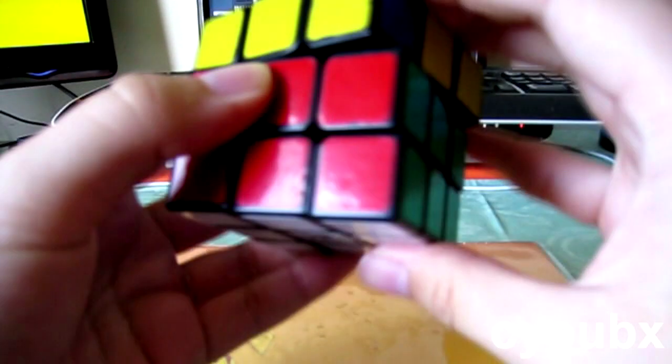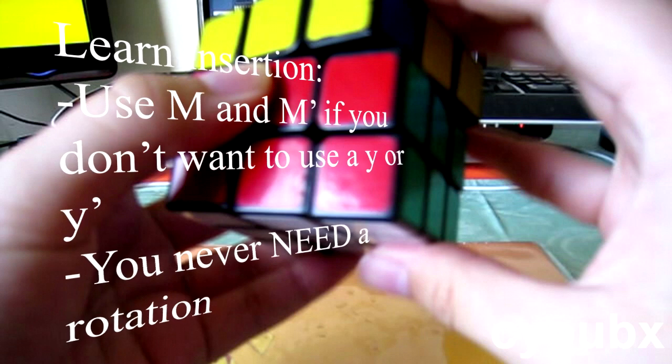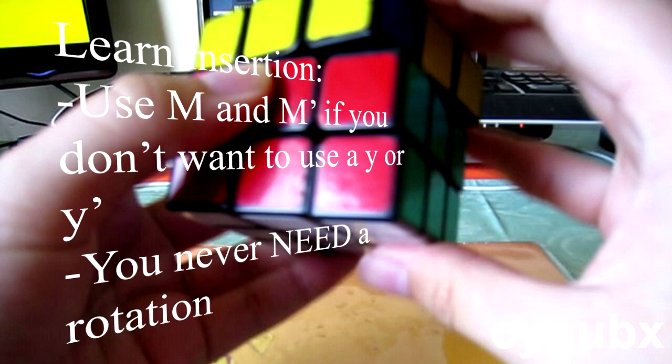This next tip is pretty much the same thing as the last one. Don't do cube rotations in order to insert F2L pairs or to pair them up. There's always ways to do it without doing a single cube rotation, but if you want to get comfortable, then you can certainly do a Y or a Y prime if it makes it easier, but never ever do a Y2.